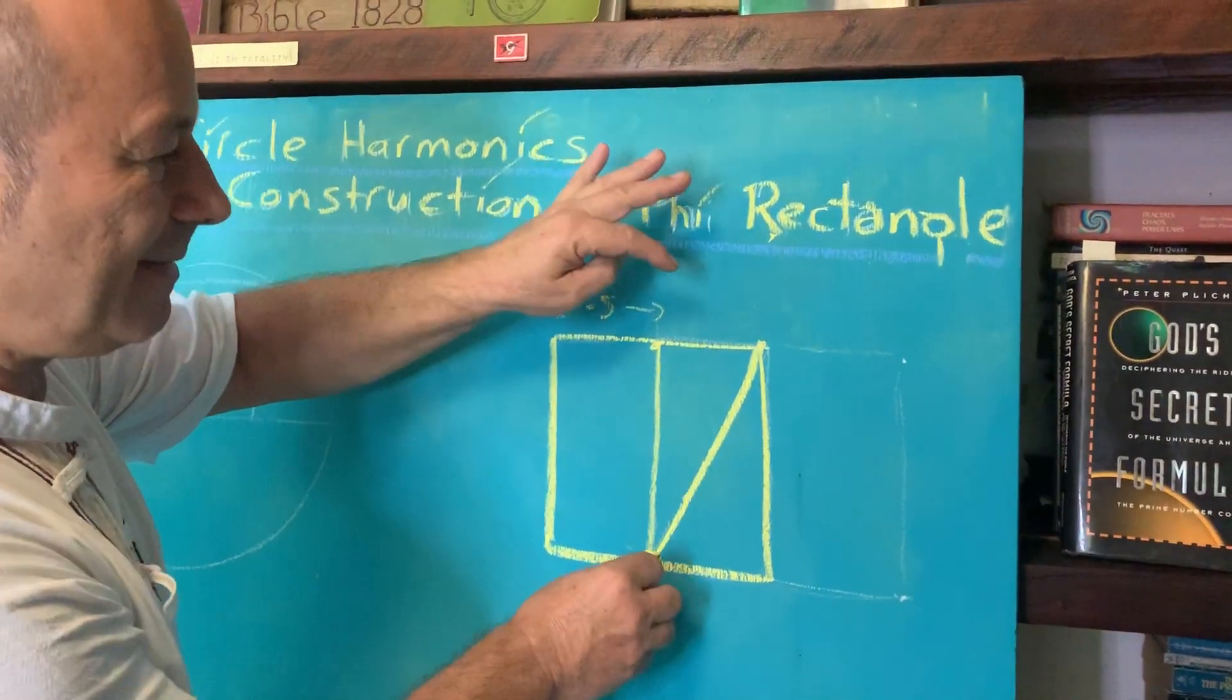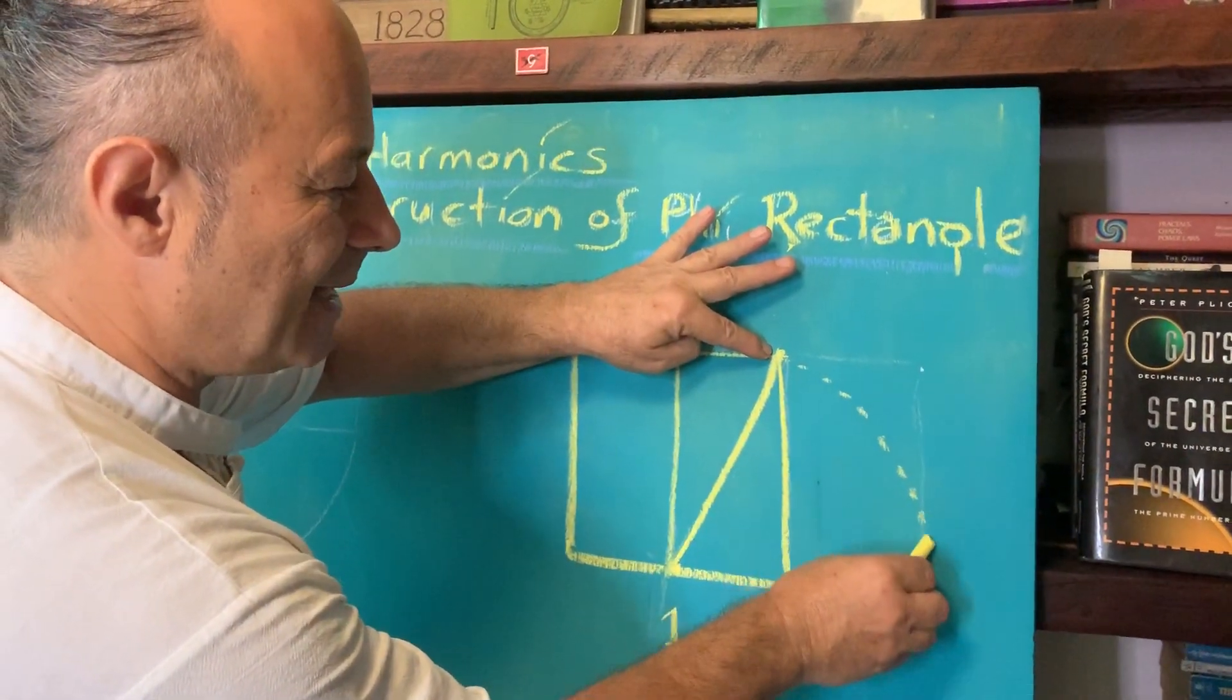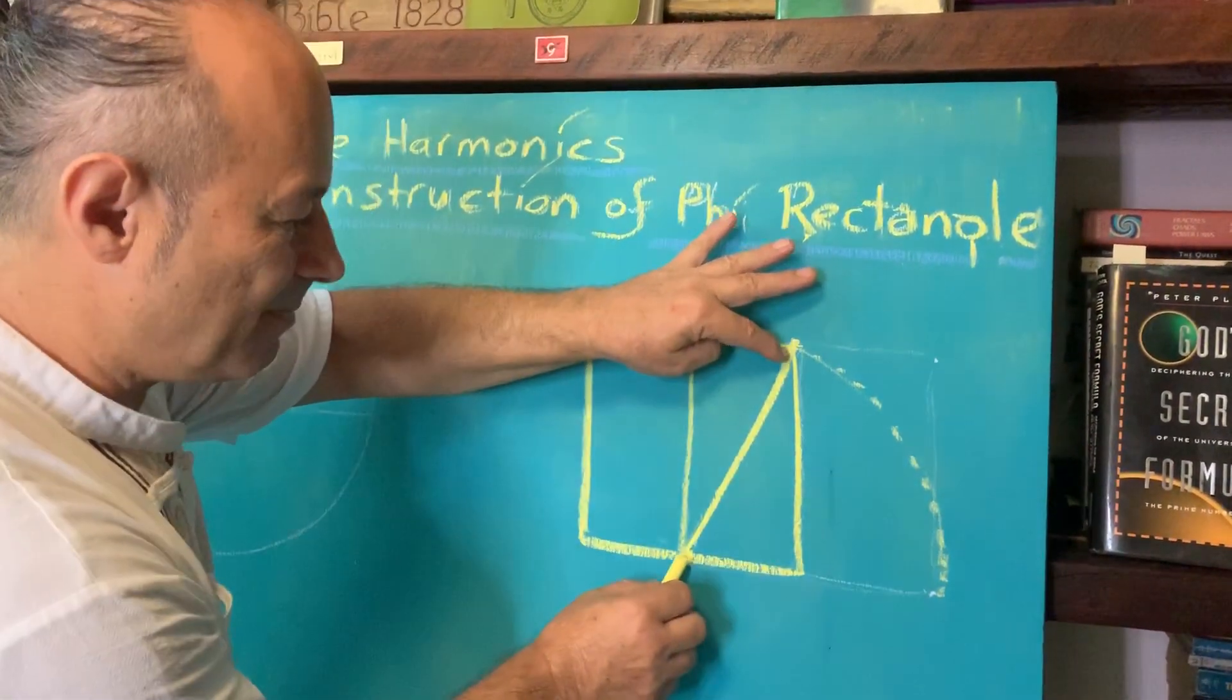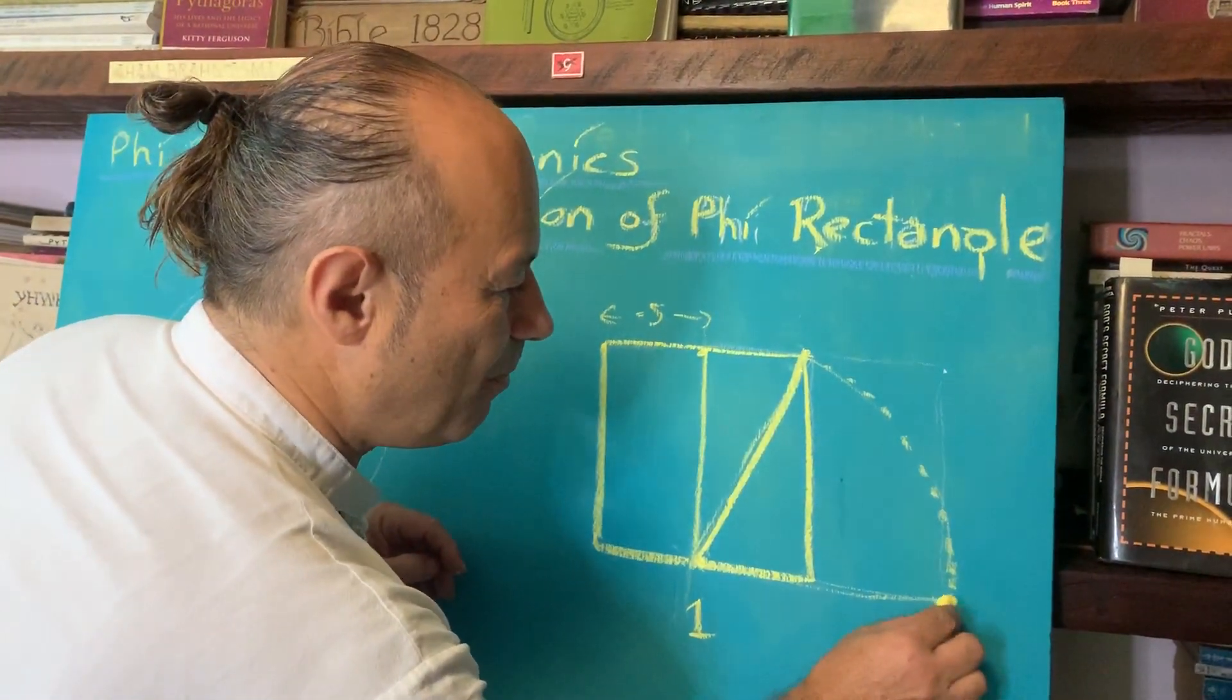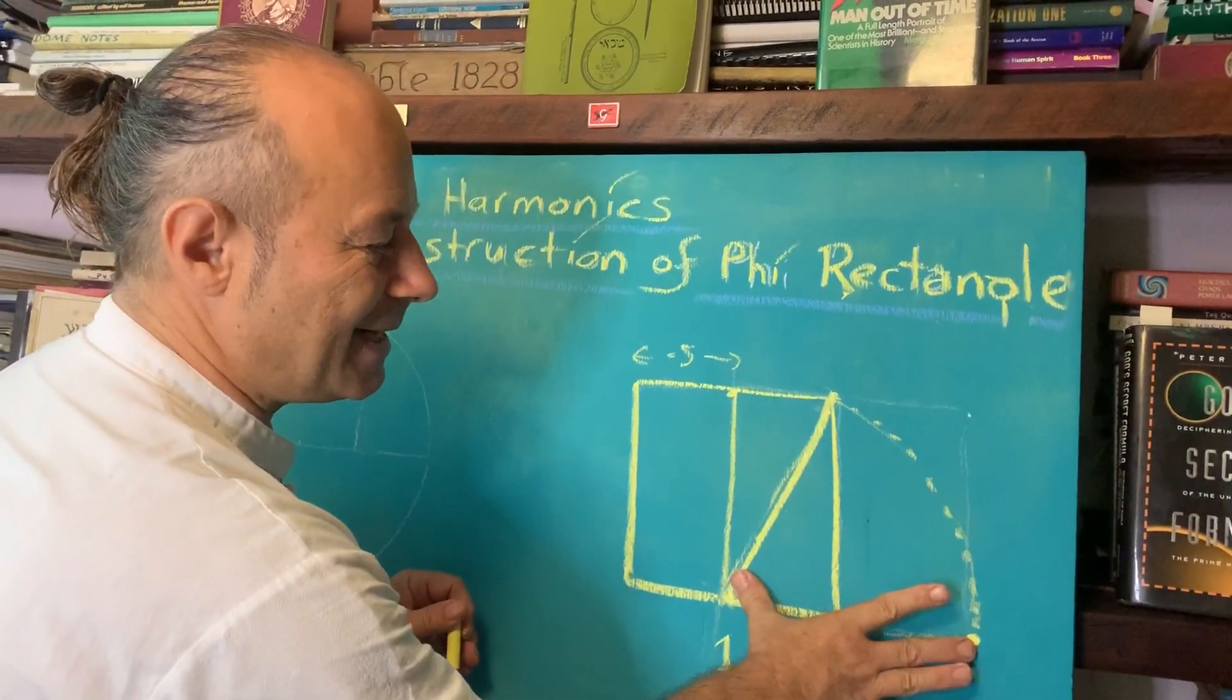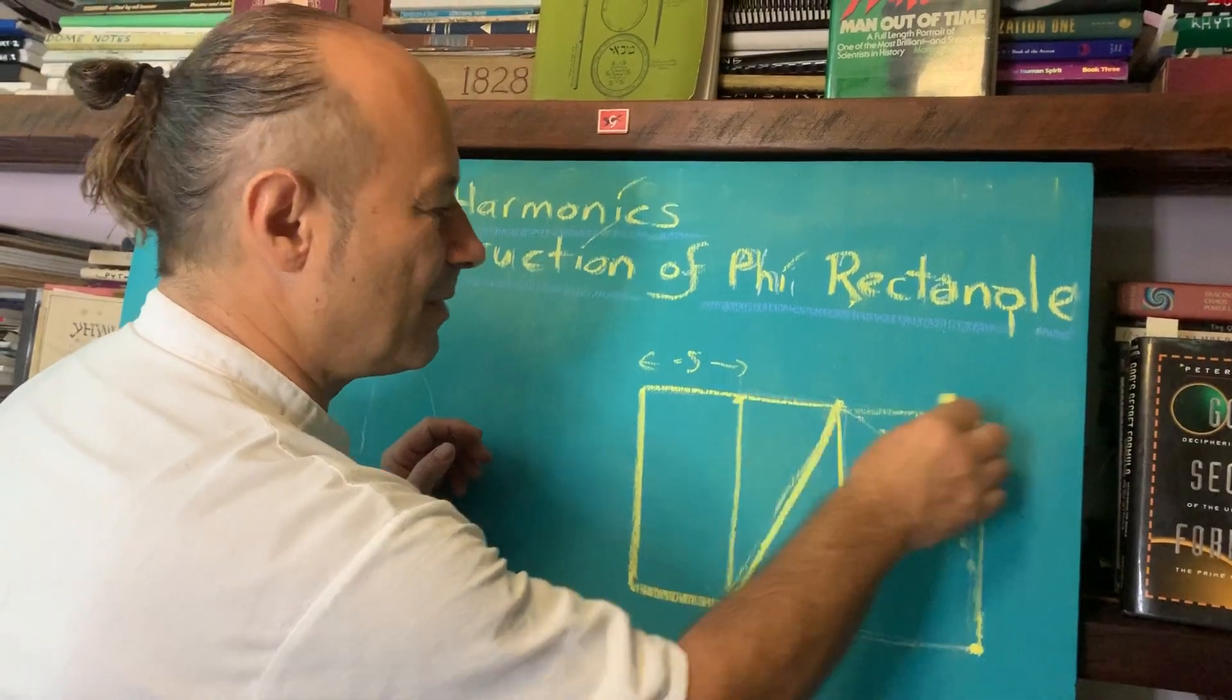We put our compass here at the point and arc it down. When we arc down this quarter circle, we get a critical point. That's how we got the golden rectangle.